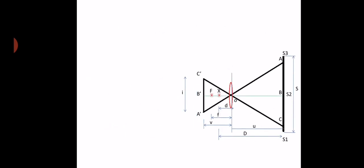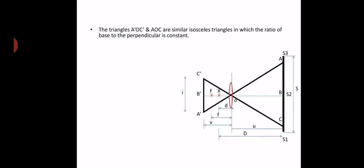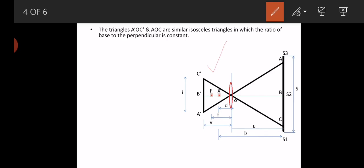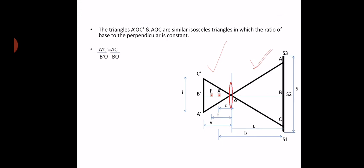Now for the derivation. In triangles A-dash O C-dash and AOC, these two similar isosceles triangles have a constant ratio of base to perpendicular. So: A-dash C-dash divided by B-dash O equals AC divided by BO. Substituting the corresponding values: A-dash C-dash equals i, B-dash O equals V, AC equals S, and BO equals U. Solving gives: i/V = S/U, therefore V equals (f/i) × U. Let this be equation number 1.